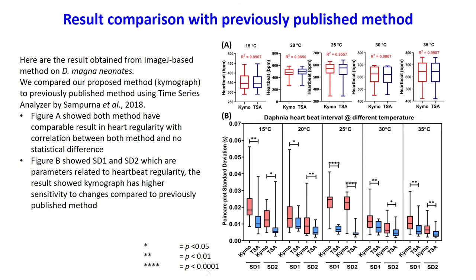Here we compare the result of our Chemograph method to a previously published method using time series analyzer, published by Samporna et al. in 2018, using Daphnia magna neonates. In figure A, both methods showed comparable results in heart rate with no statistical difference. However, in figure B, using SD1 and SD2, which are parameters related to heartbeat regularity, the Chemograph showed higher sensitivity to changes compared to the previously published method.